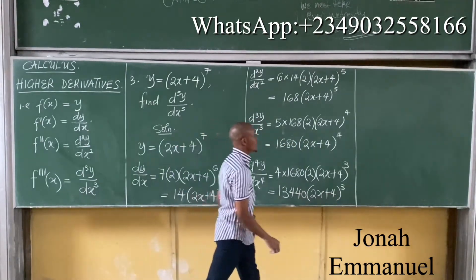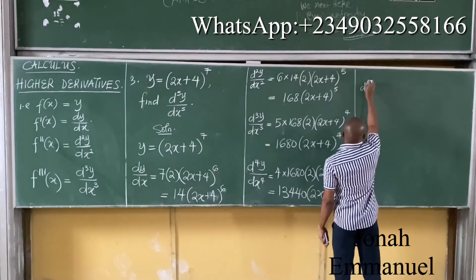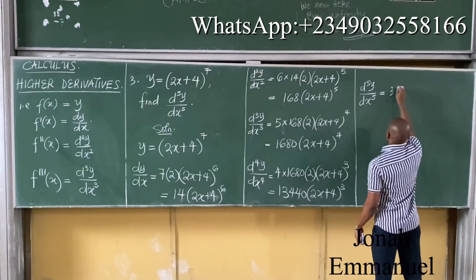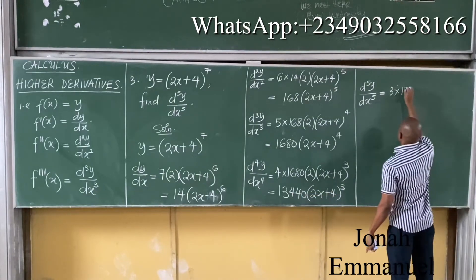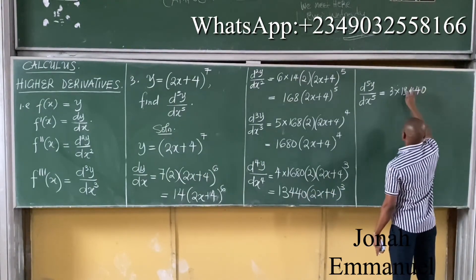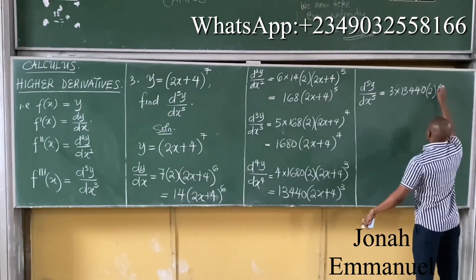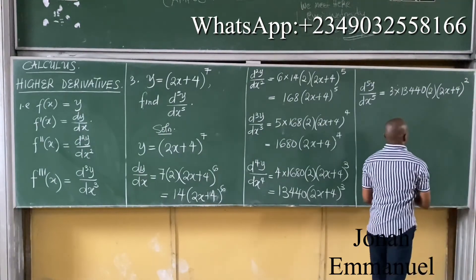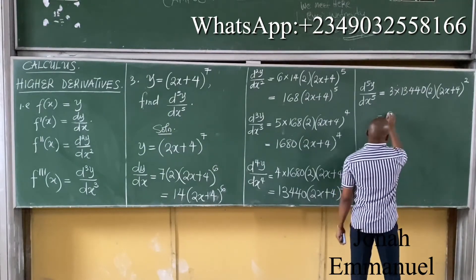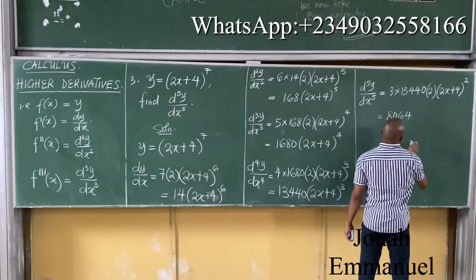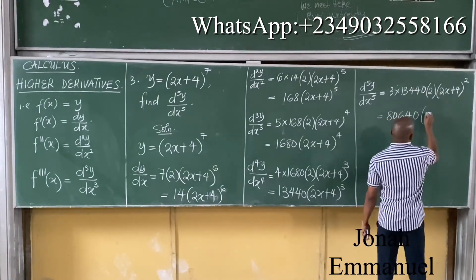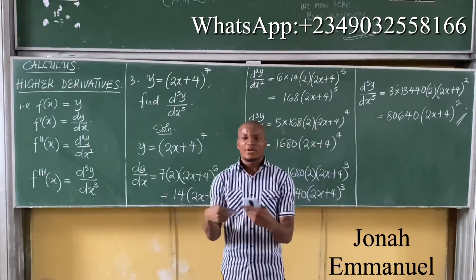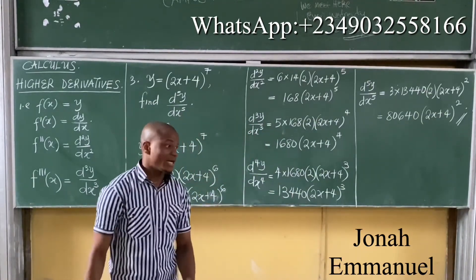I have done this four times; this is the fifth time. So for d⁵y over dx⁵, write down the power 3, multiplied by 13440, differentiate the inner function to get 2, repeat (2x+4), subtract 1 to get power 2. Multiplying gives 80640(2x+4)². So this becomes your answer. That is how you solve this question.